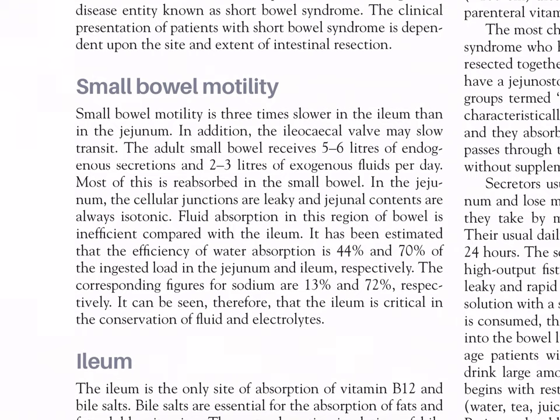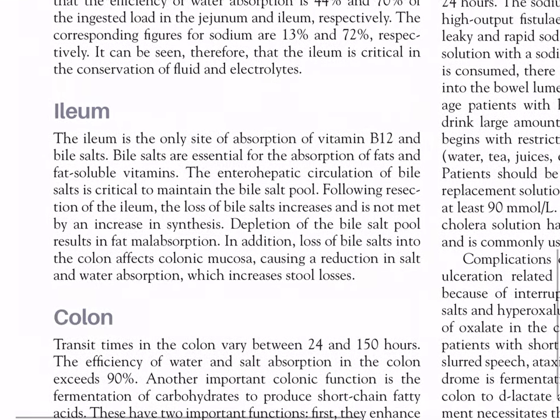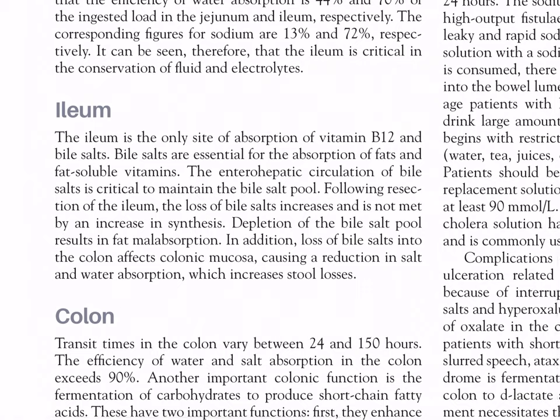In the jejunum, cellular junctions are leaky and jejunal contents are always isotonic. Fluid absorption in this region is inefficient compared with the ileum. It has been estimated that the efficiency of water absorption is 44% in the jejunum and 70% in the ileum. The corresponding figures for sodium are 13% and 72% respectively. It can therefore be seen that the ileum is critical in the conservation of fluid and electrolytes.